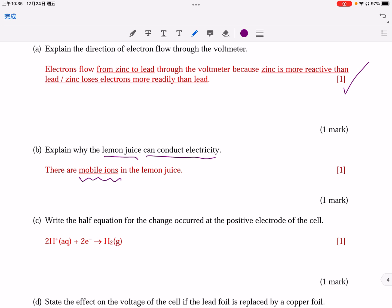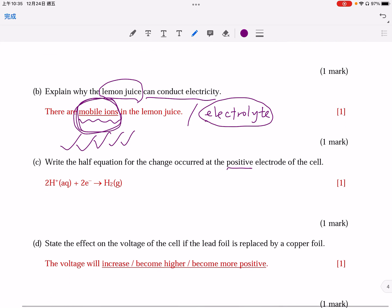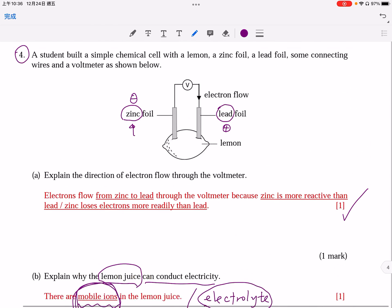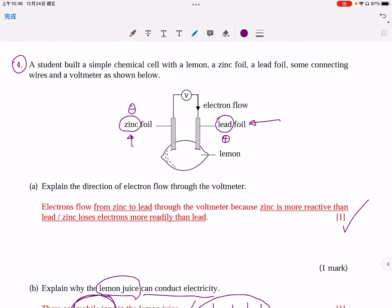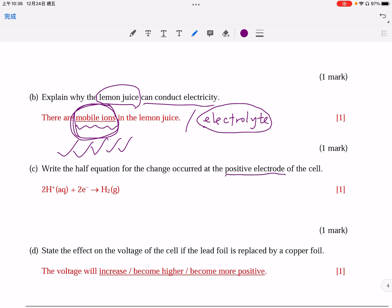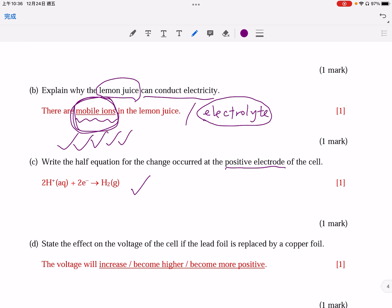Why the lemon juice can conduct electricity? This is the best answer. There are mobile ions. Of course, you may say that lemon juice is an electrolyte. This is not good enough, actually. Why an electrolyte can conduct electricity? It is due to the presence of mobile ions. So, mobile ions is the best answer. Positive electrode is the lead. Therefore, cations will migrate towards the positive electrode. In this case, it should be the H+. H+, becoming H2.